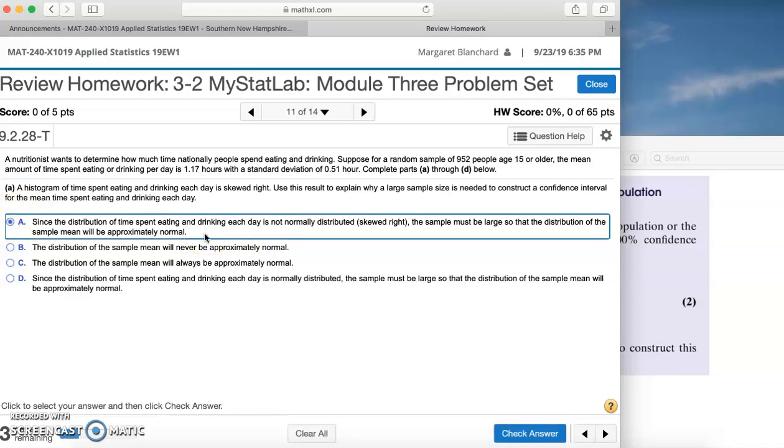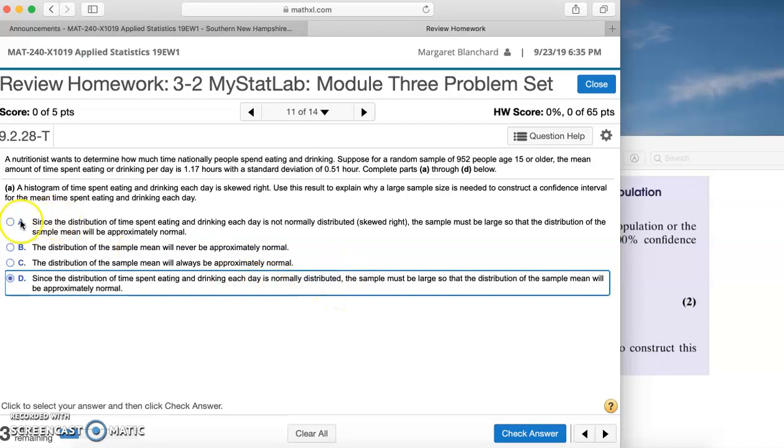That's what we talked about. If you have a large enough sample size, you can assume the normality of the sample mean. The other options are: the distribution of the sample mean will never be approximately normal - not true. The distribution of the sample mean will always be approximately normal - also not true. And since the distribution of time spent eating and drinking each day is normally distributed, which we already know that's not true. So we know that option A is the correct option.